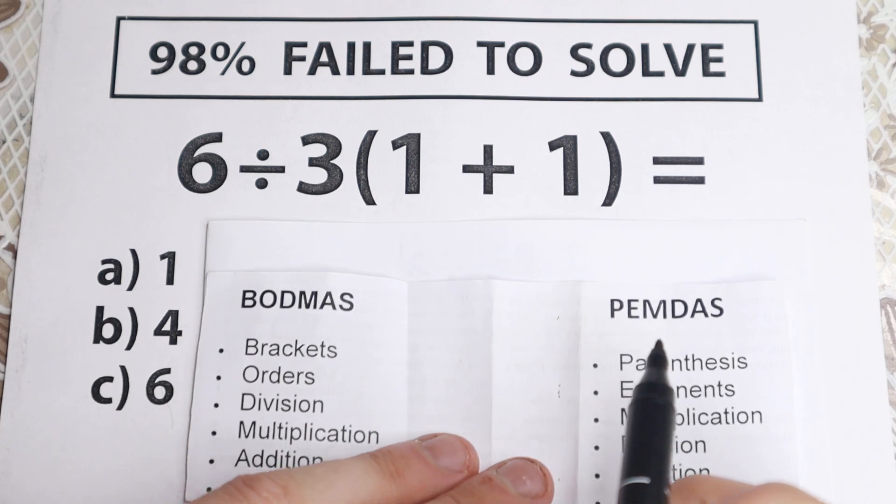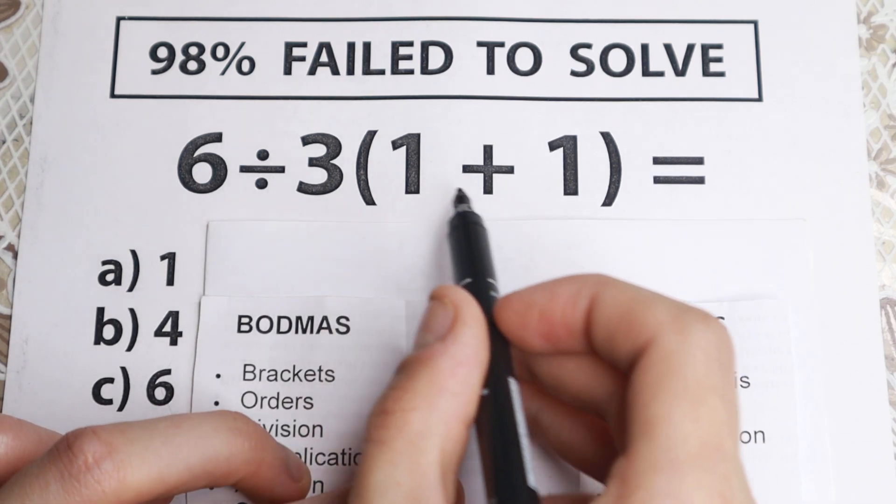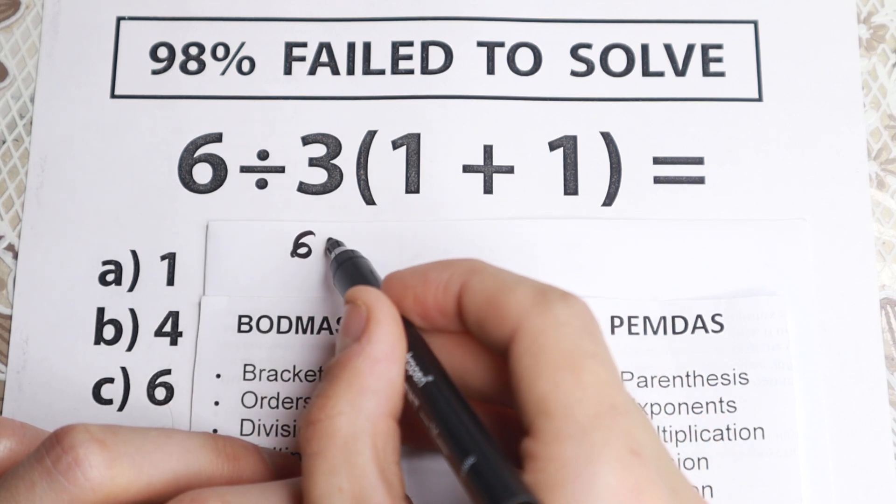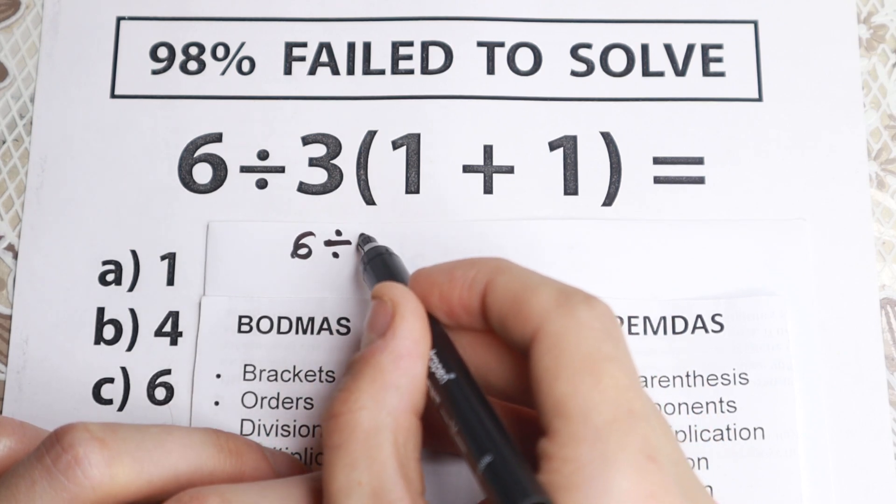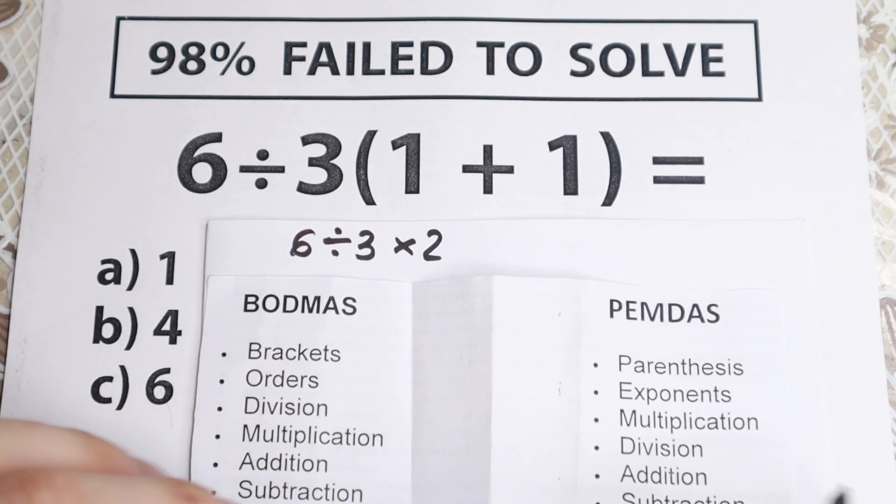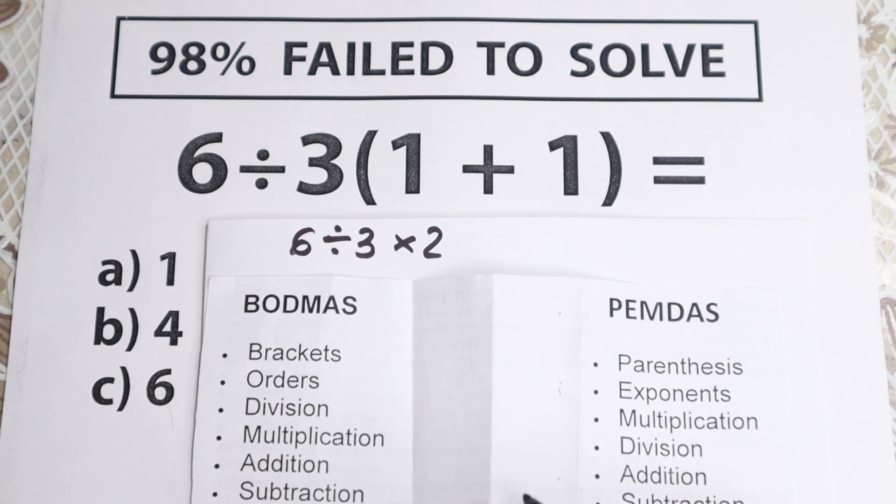So let's start with this. I want to put it down right here and let's start with these parentheses. Right here we have 1 plus 1 which is equal to 2. So we will have 6 divided by 3 and we multiply it by 2. According to both methods this will be the correct first step because we need to start with brackets.